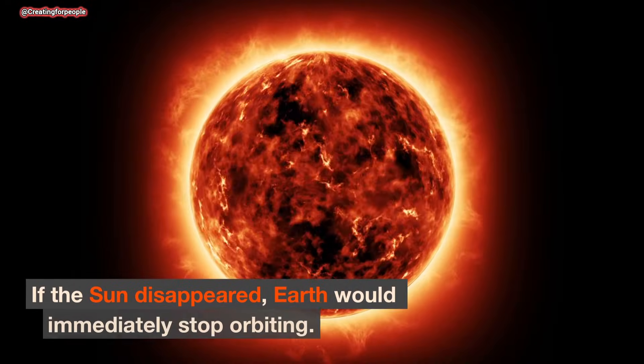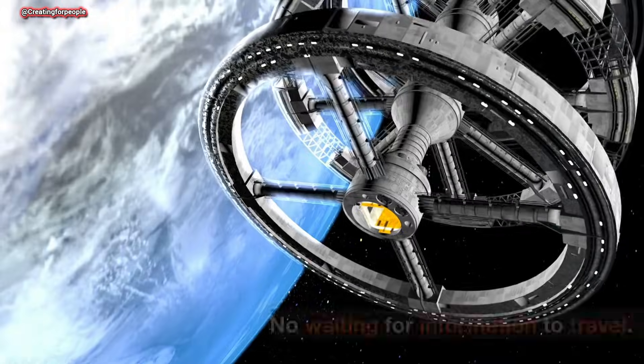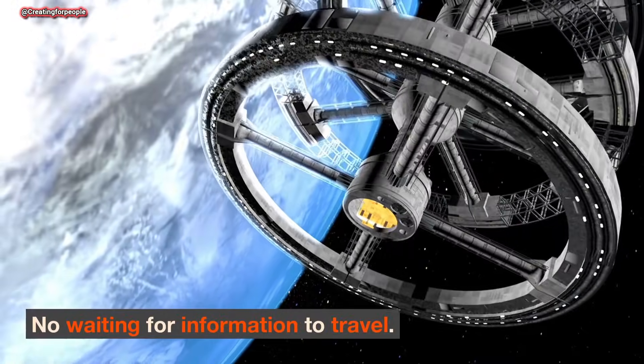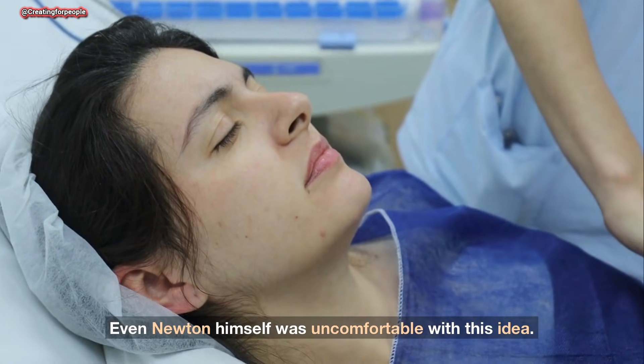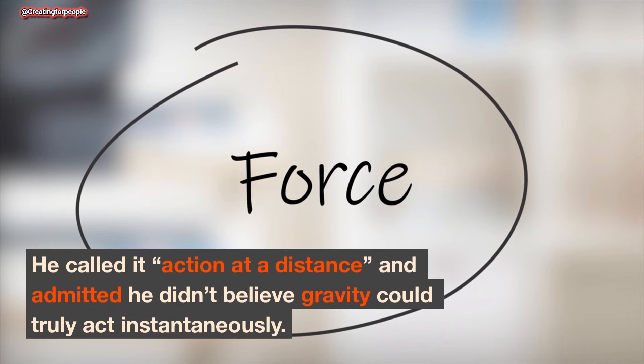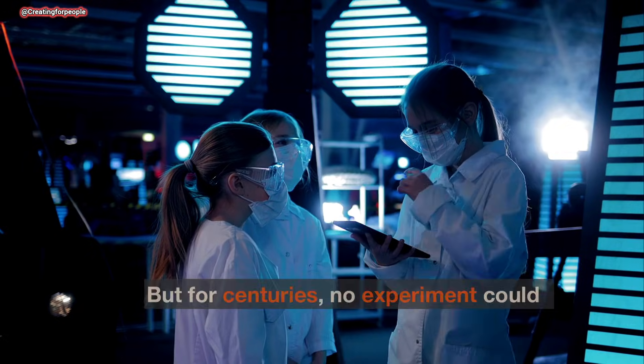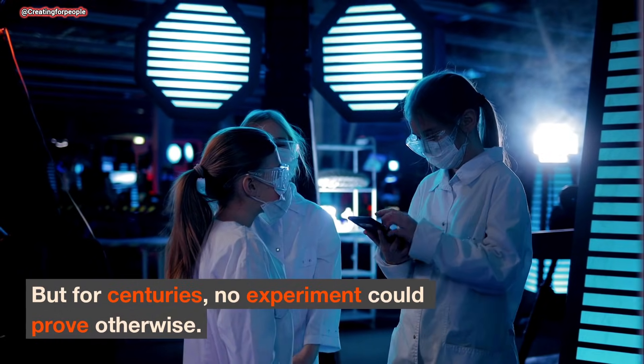If the sun disappeared, Earth would immediately stop orbiting. No delay, no waiting for information to travel. Even Newton himself was uncomfortable with this idea. He called it action at a distance and admitted he didn't believe gravity could truly act instantaneously. But for centuries, no experiment could prove otherwise.